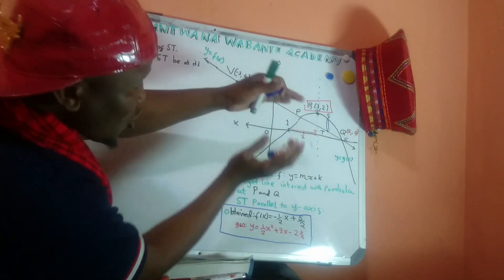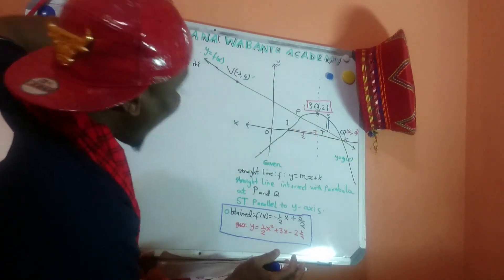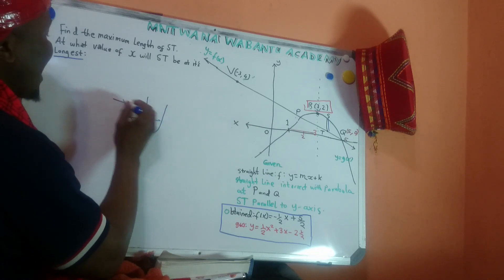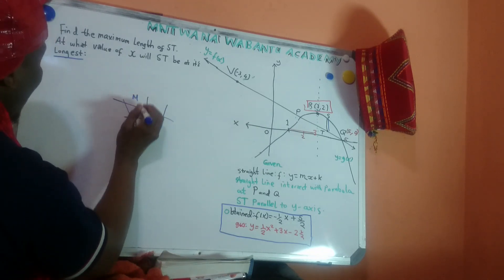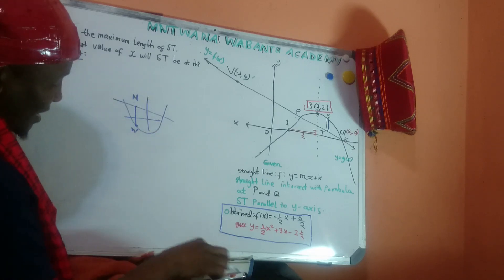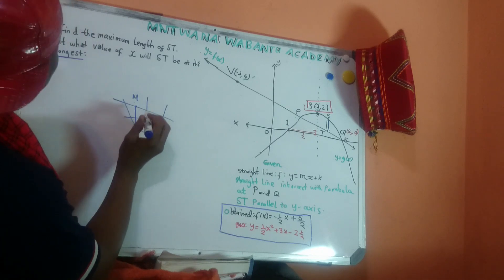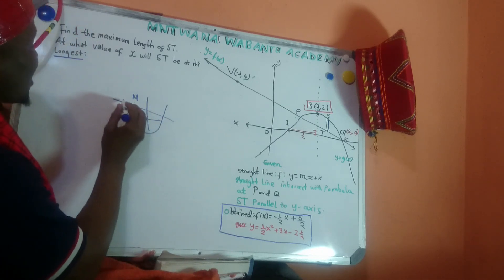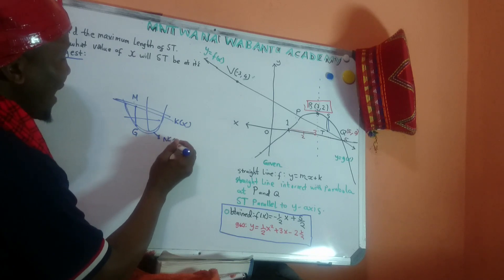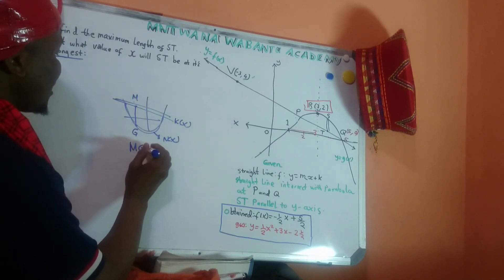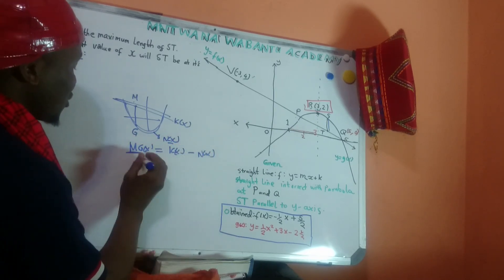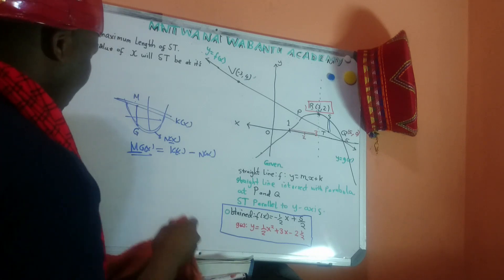Whenever you have two graphs and somebody asks you for a length - like the distance from Mali to Ghana - you take the top graph minus the bottom graph. So if this is K(x) on top and Nigeria(x) on the bottom, then the length from Mali to Ghana equals K(x) minus Nigeria(x). That's how you get the length.